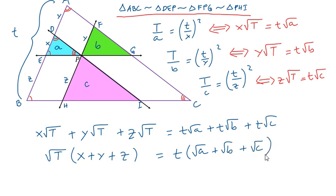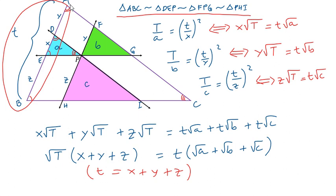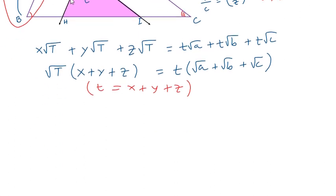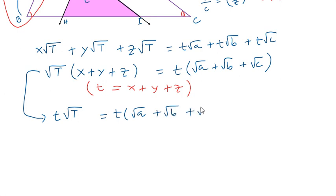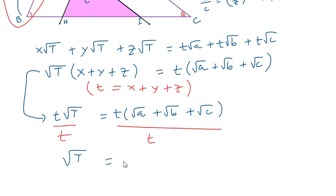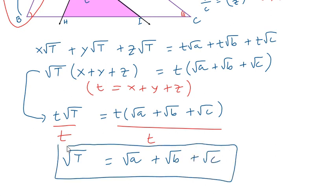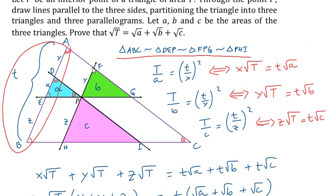Now, t equals X plus Y plus Z. We can replace X plus Y plus Z on the left side to obtain t times the square root of T equals t times the quantity square root of A plus square root of B plus square root of C. Dividing both sides by t, we have proven that the square root of T equals the square root of A plus the square root of B plus the square root of C.